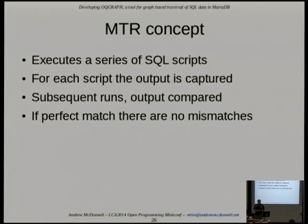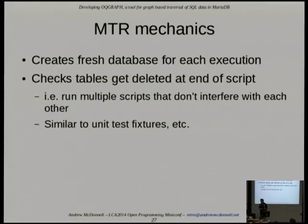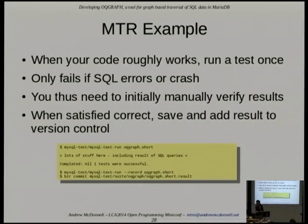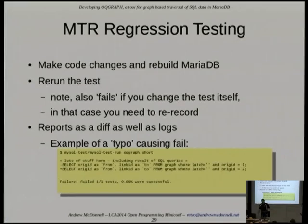When Debian packages MariaDB, they actually run all the tests during the package build — you can't produce a Debian package without passing all tests. MTR is like a typical unit test: it runs the script and creates a fresh database for each test suite so data doesn't interfere. You develop a set of SQL scripts, record the results when working correctly, and then later if you've introduced a bug, it gives you a diff showing where the test failed because the output changed.